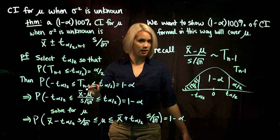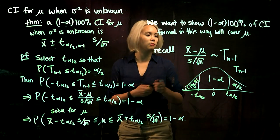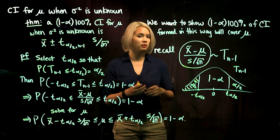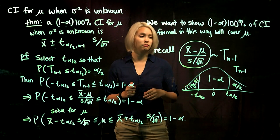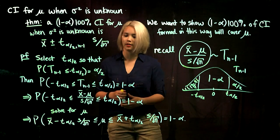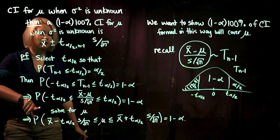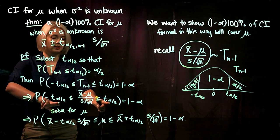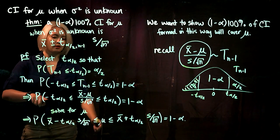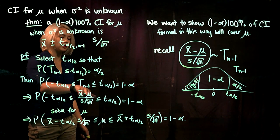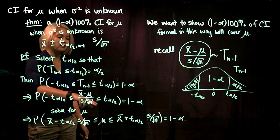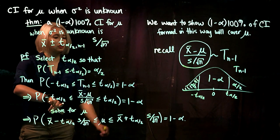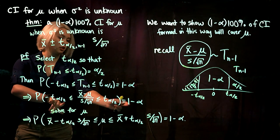But what has a t distribution with n minus 1 degrees of freedom? This quantity: x bar minus mu divided by s over root n. So let's go ahead and write that in. The probability that x bar minus mu divided by s over root n is between negative t alpha over 2 and positive t alpha over 2 is still 1 minus alpha.